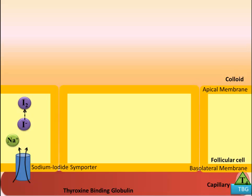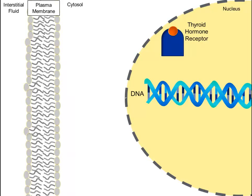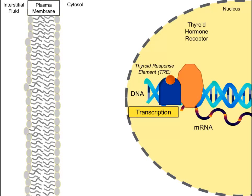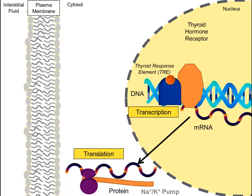When T4 arrives at a target cell, it diffuses out of the blood vessel and into the interstitial fluid, leaving the transport protein thyroxine binding globulin behind. The T4 then diffuses across the plasma membrane, and once in the cytosol, T4 is converted into the more active T3 form by the enzyme monodeidinase. T3 then diffuses into the nucleus and binds to a thyroid hormone receptor. This complex binds to the thyroid hormone response element and initiates nuclear transcription and cytosolic translation. The protein product, shown here as a sodium-potassium pump, would then be able to initiate the effects of the hormone.